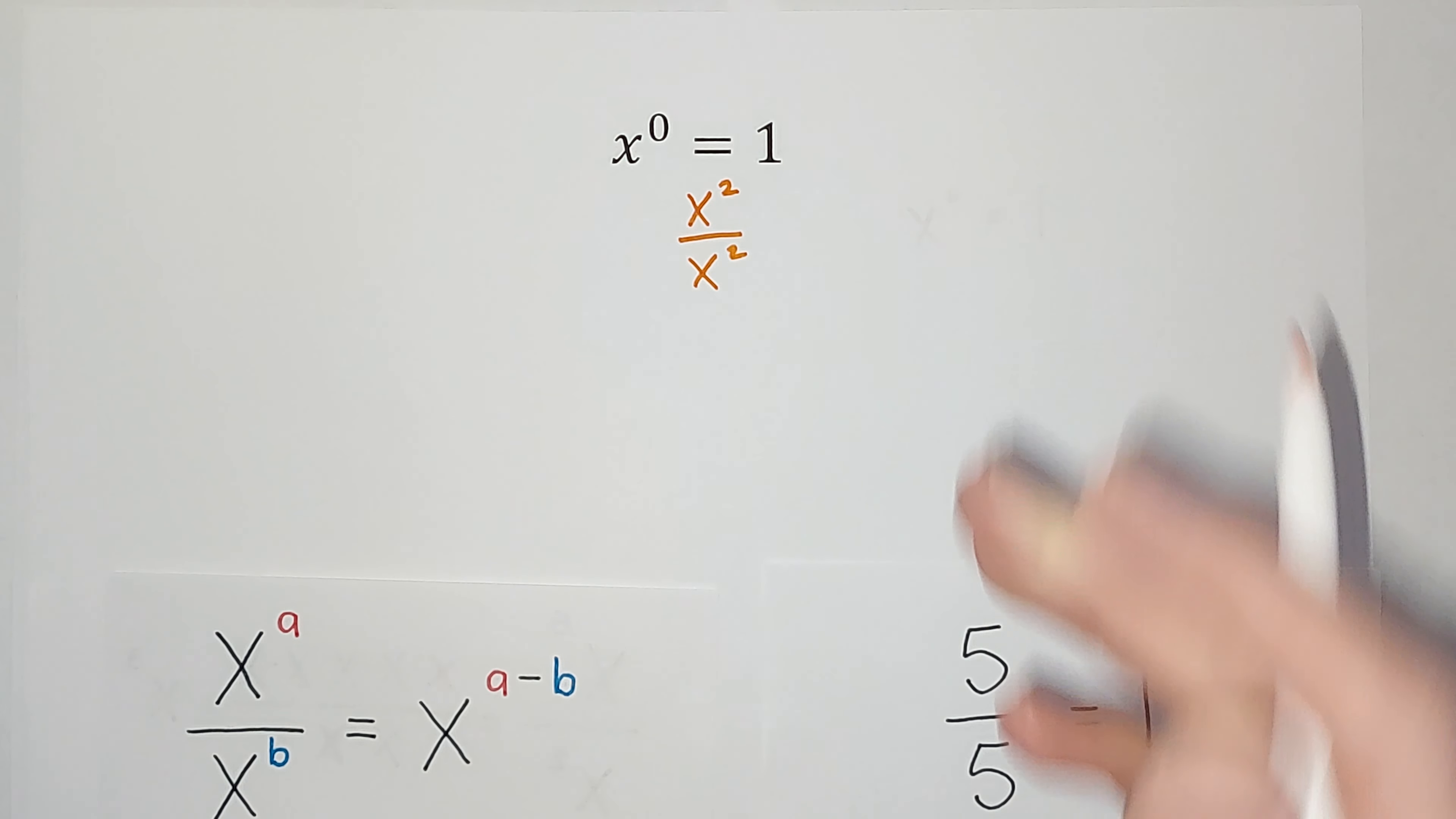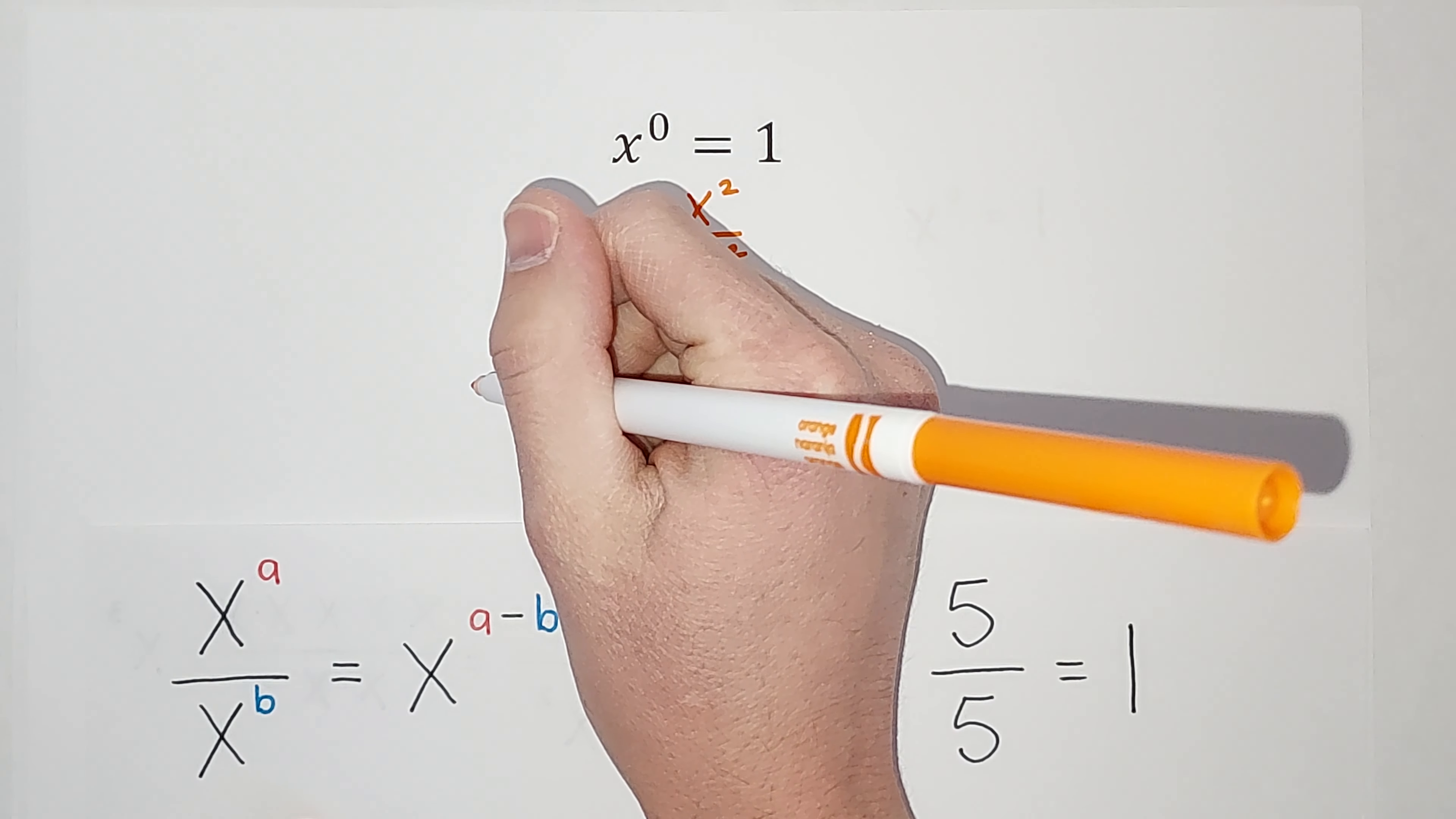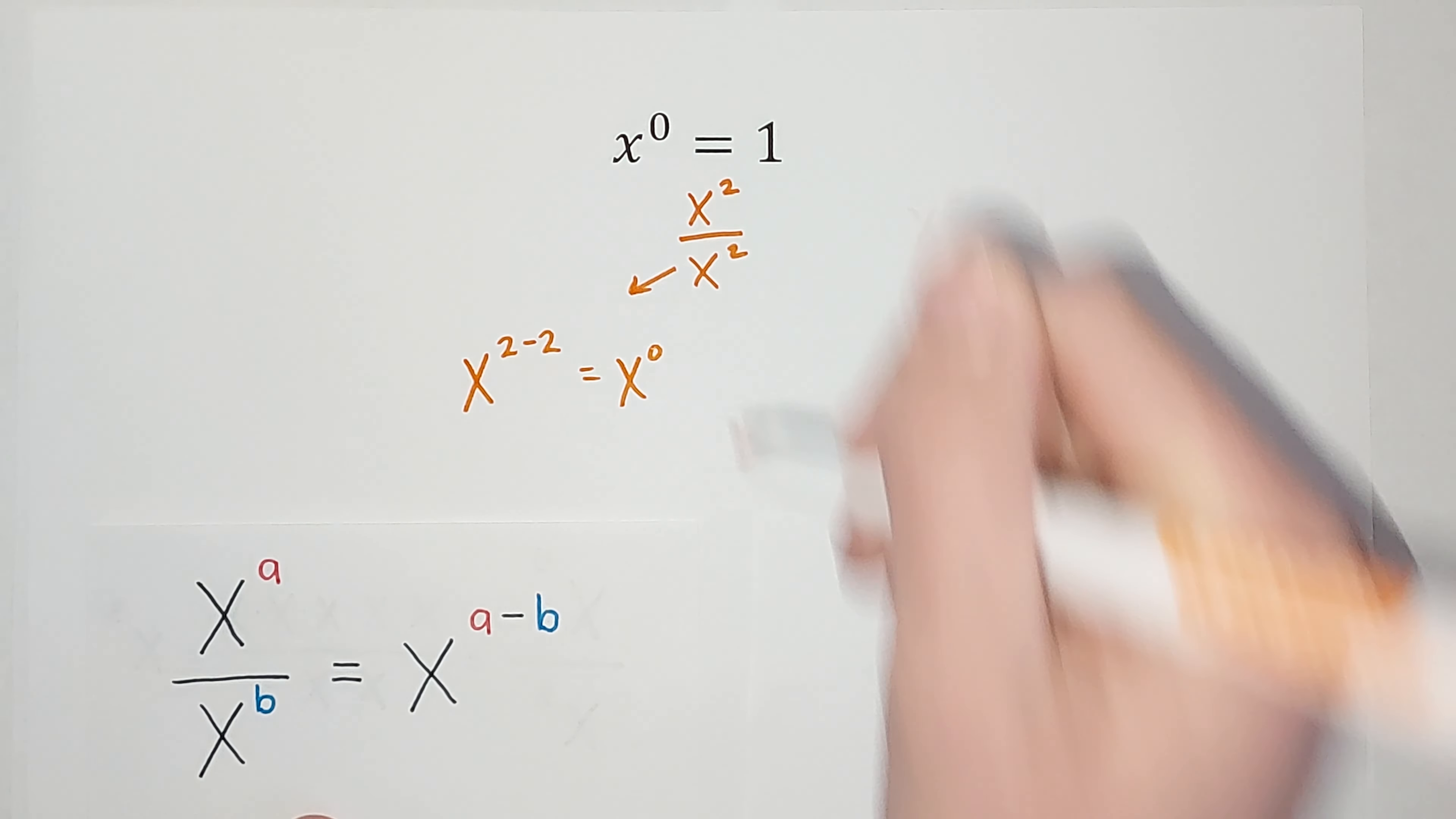Going this way, I can look at this as exponents with the same base being divided, so I can subtract the exponents. It would look like x to the two minus two, which would give me x to the zero power.